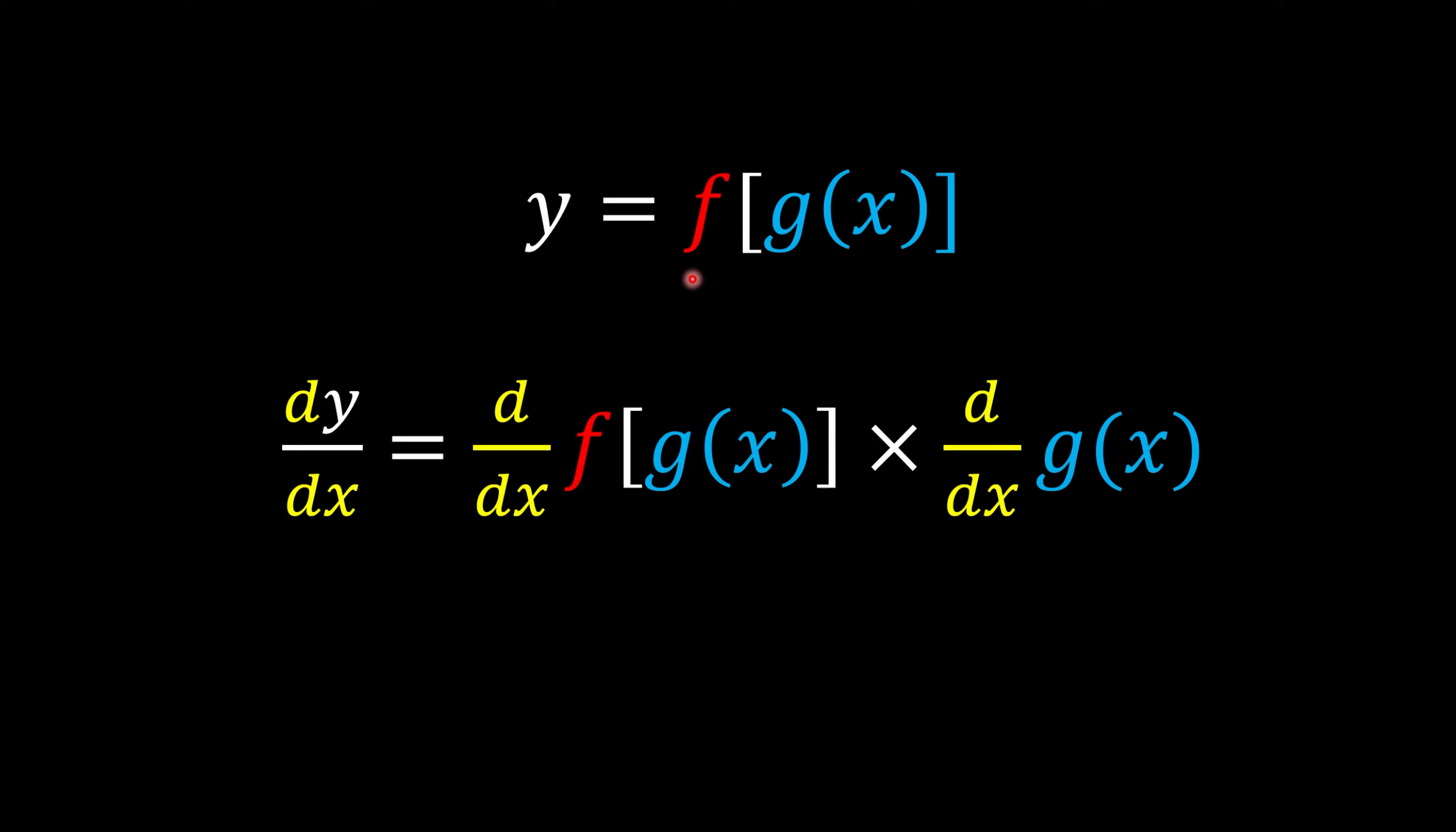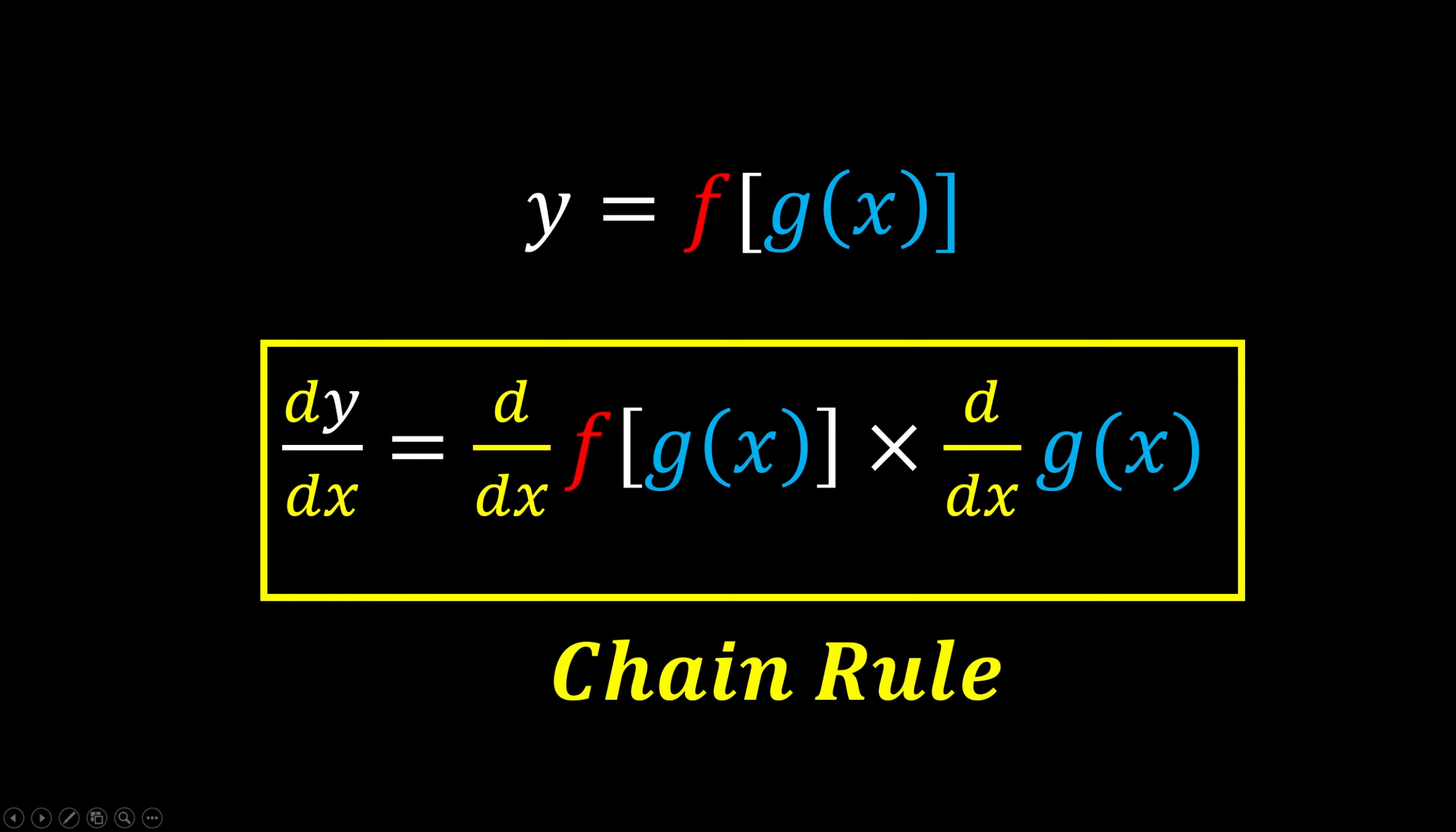They tell us that we just need to break it down to become two parts. The first part is take the derivative of the whole function, and the second part is we're going to times with the derivative of the inner function. And this is what we call the chain rule.